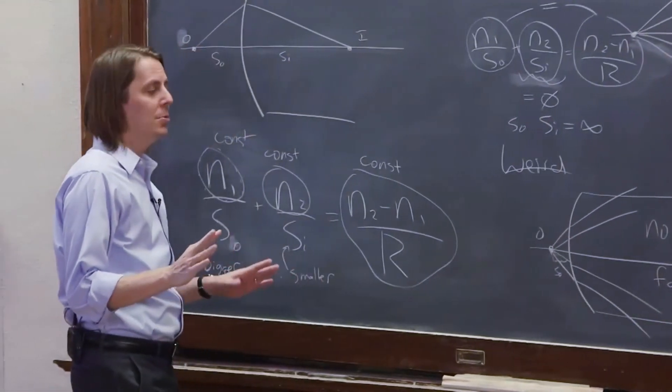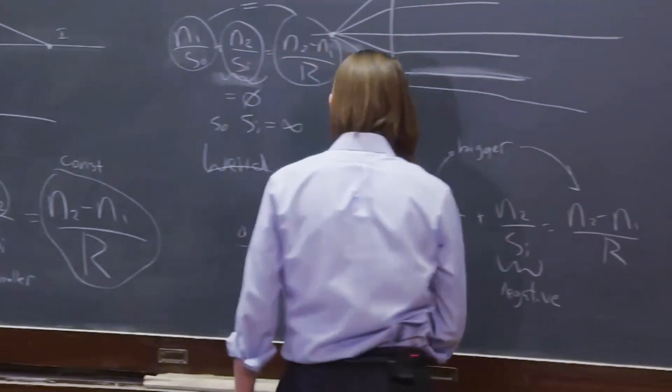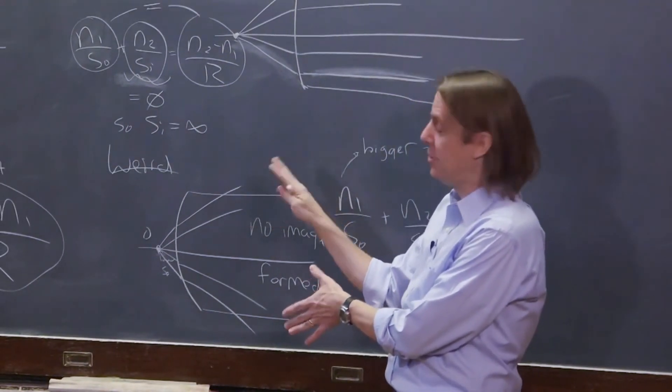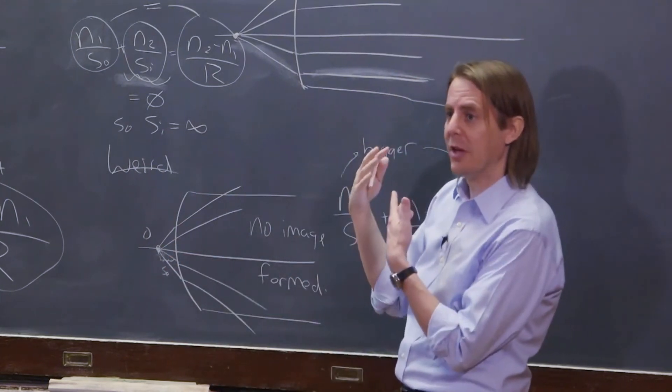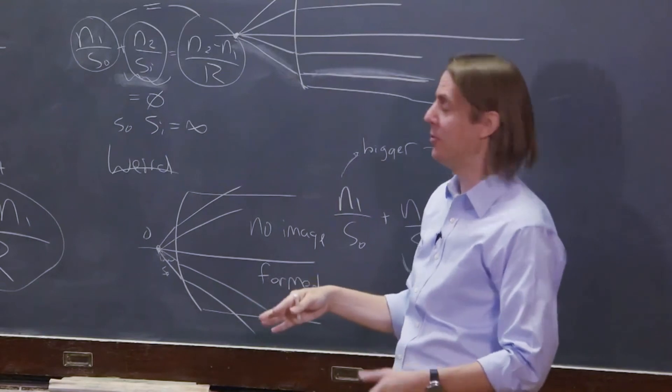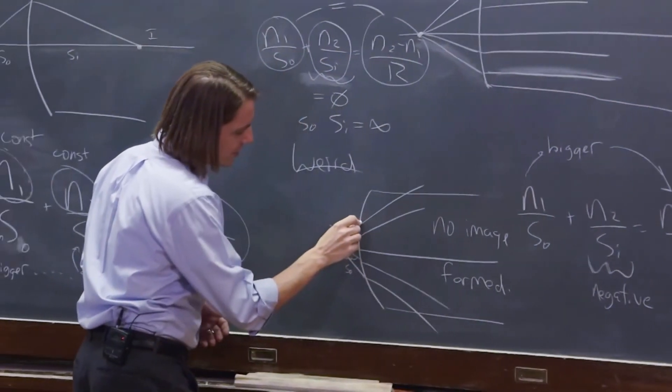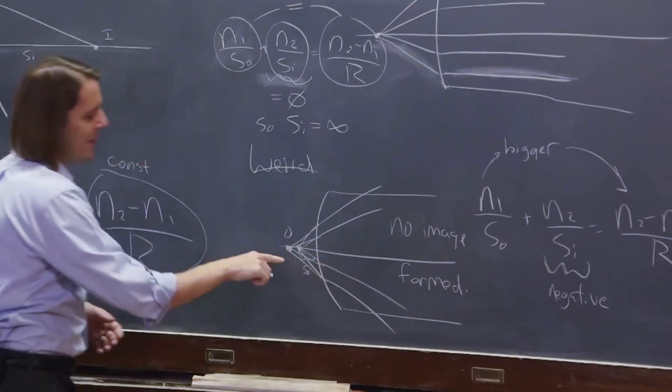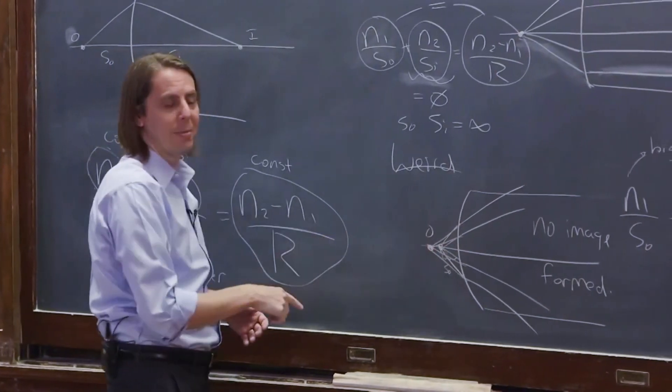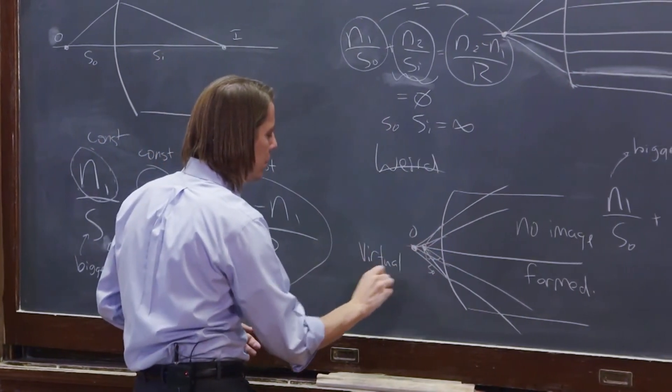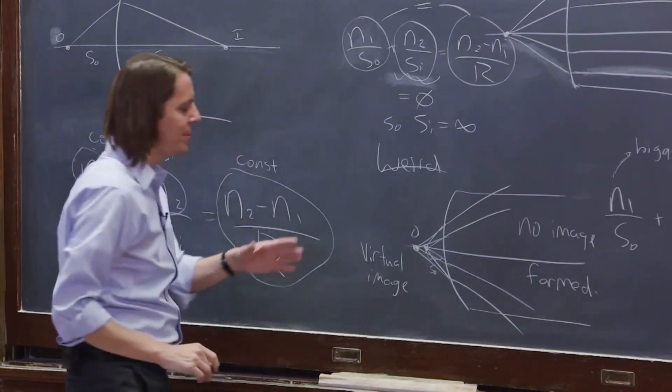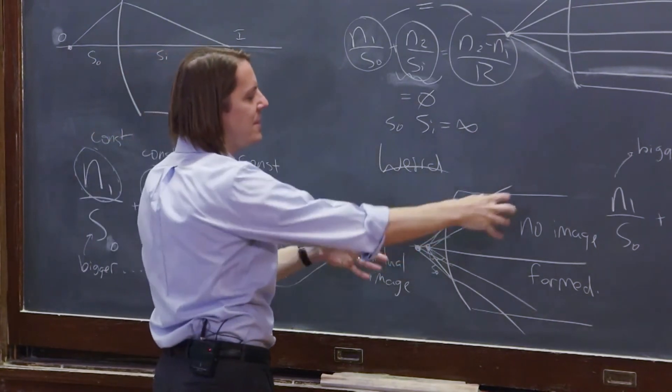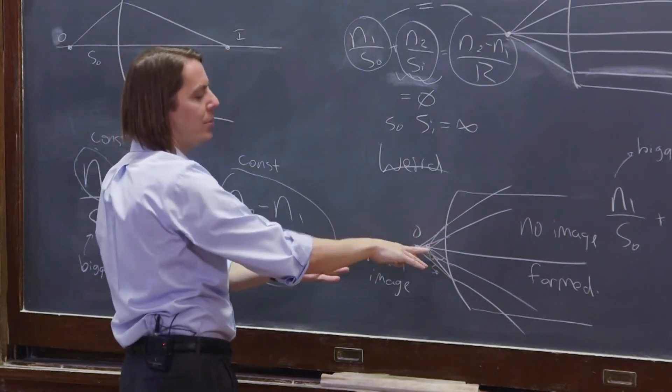So we have no what we would call a real image. However, if you were to stand over here and put your eye over here and look at these rays, what would you see? Well, you don't know the glass surface is there. You just see rays, and your brain just projects the rays back, or the optics of your eye projects the rays back in space, and then say, well, there must be some point source of light back here somewhere. You might get an image. It would look like there's an image in the back. This is a virtual image.